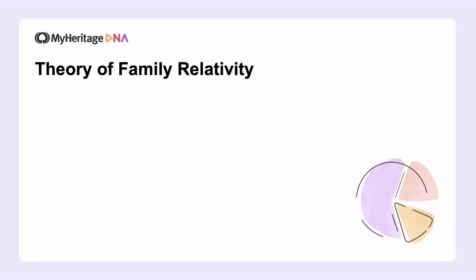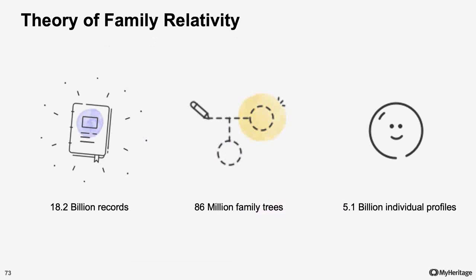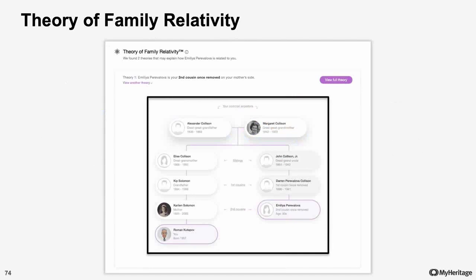As you may recall, for each match that we have, we give an estimated relationship between yourself and that match, and it usually comes as a range of options. What we try to do with Theory of Family Relativity is narrow down that range into a single option and show you how we got to that suggestion. Theories can be found in the matches overview page, the review match page, and in their own unique theories page. To calculate these theories, we rely on all the genealogical data we have at MyHeritage — family trees, historical records, DNA matches, smart matches, record matches, and so on — to create a cohesive path between you and your DNA match. That means that even if your tree doesn't have enough information, we use all the trees in MyHeritage, all the different matches and records, and a whole lot more technology and data to find how the two of you are linked.